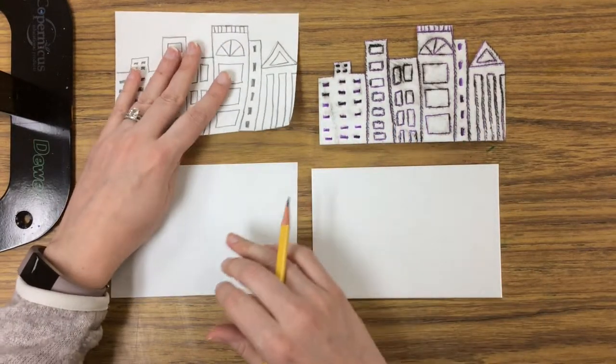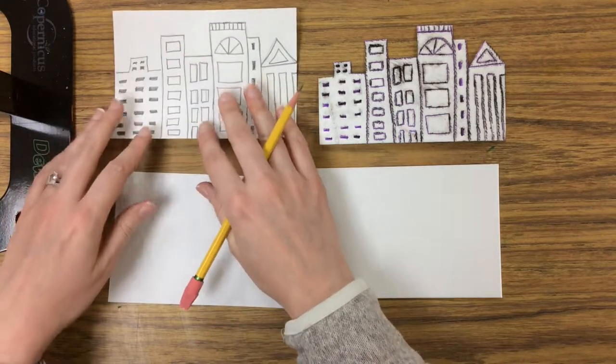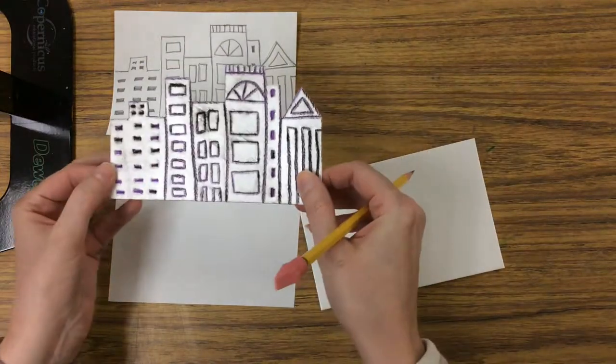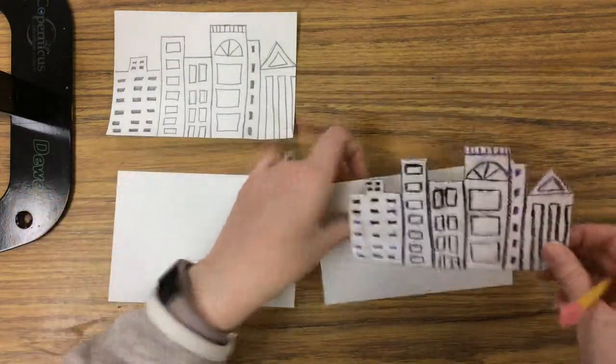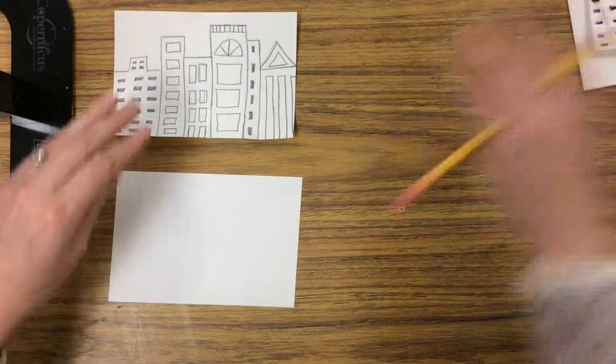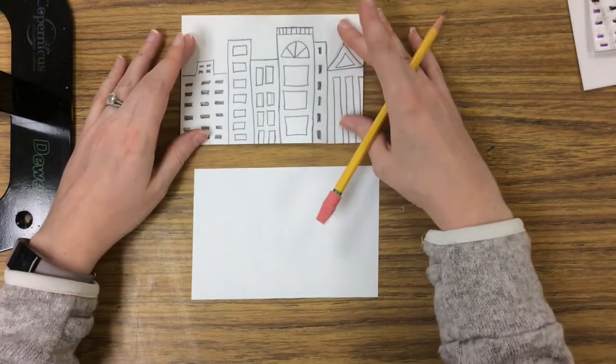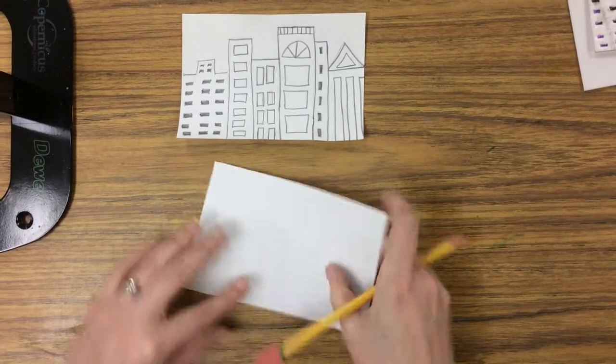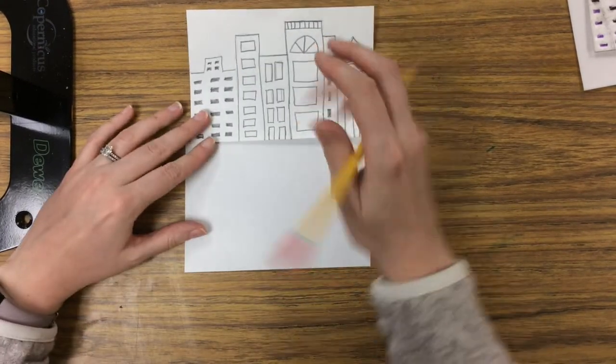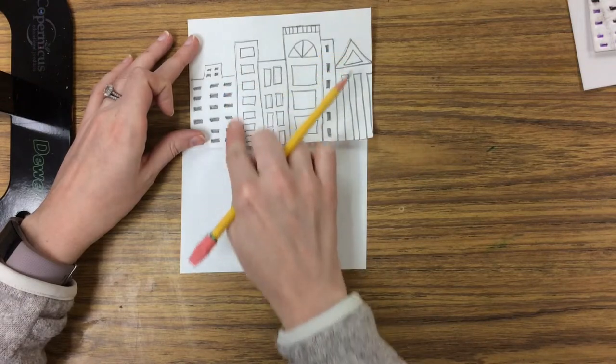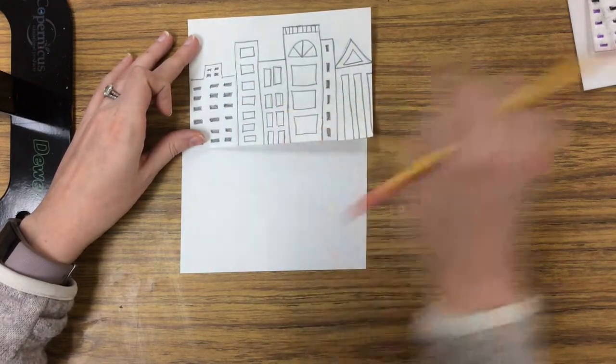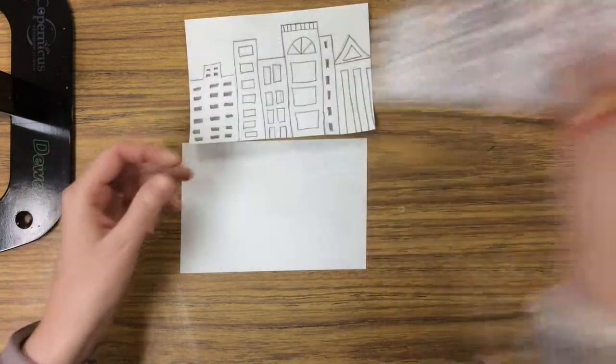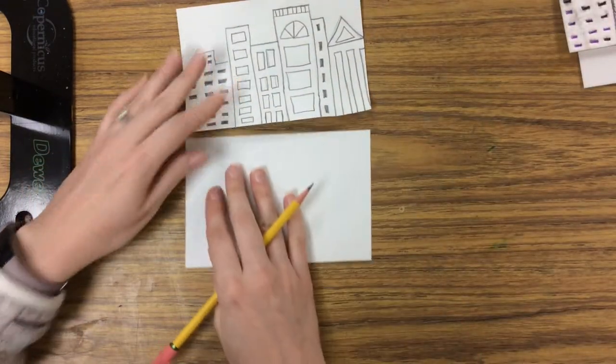For the city skyline portion of this project, you will be using a four by six piece of paper to sketch out your city, and then eventually we'll transfer that onto some styrofoam which we can use for printmaking. You're going to get your piece of paper, name on the back, and you can design your buildings how you want, but the big thing is we want no space in between them so that when we eventually cut it out of our styrofoam it's all one piece.